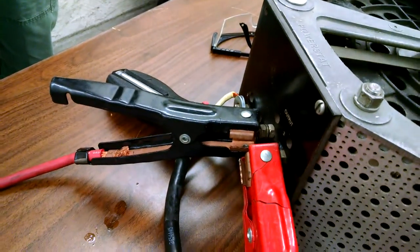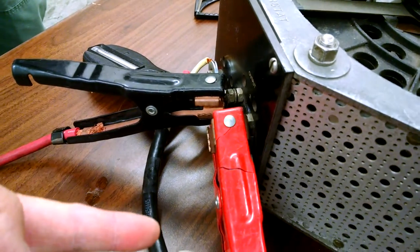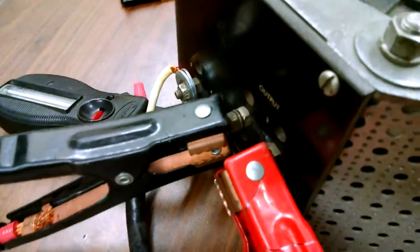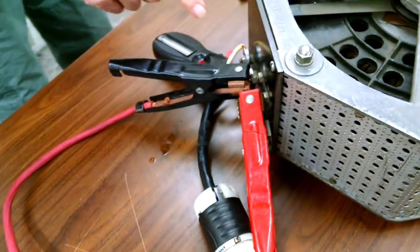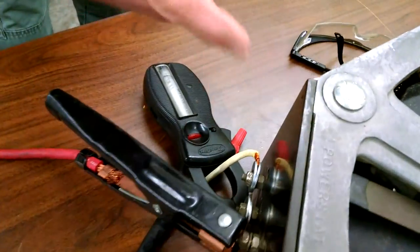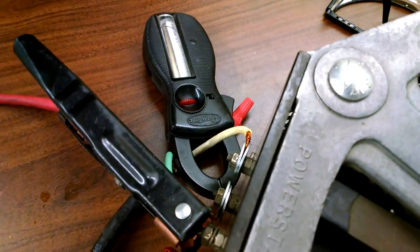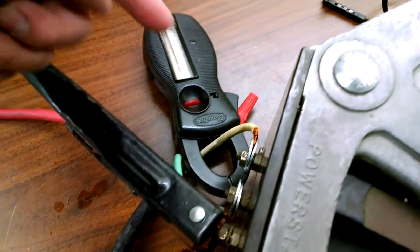So for those of you who are watching, he currently has two alligator clips hooked up here. This goes directly to the light bulb and this white and green one goes to the input of this transformer. It's operating off of 120 volts.